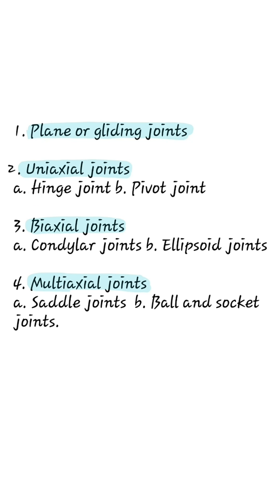Uniaxial joints: hinge joints include the elbow joint, ankle joint, and interphalangeal joints. Pivot joints include the atlanto-axial joint and superior radioulnar joint.